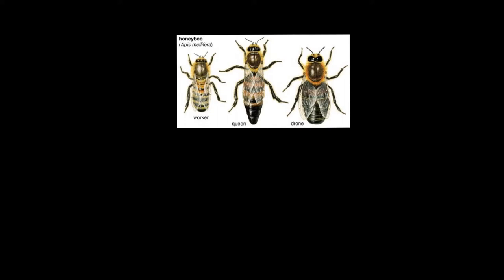For example, if this is going to be a queen, the queen would be diploid. If I use four sets of chromosomes, those diploid bees have 32 chromosomes, and haploid drones have half the number — 16 chromosomes. But today I will use a simplification in order to explain the haplodiploidy system in honeybees, so a drone would get only half of these chromosomes.